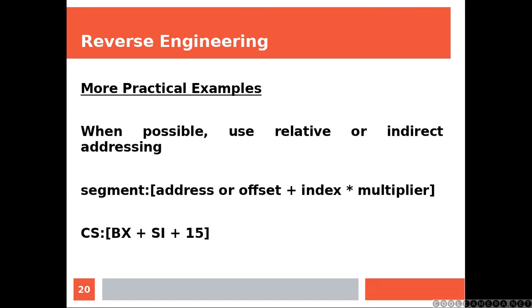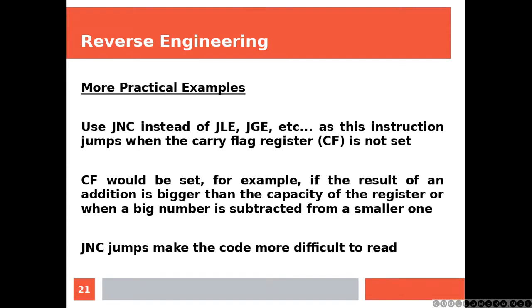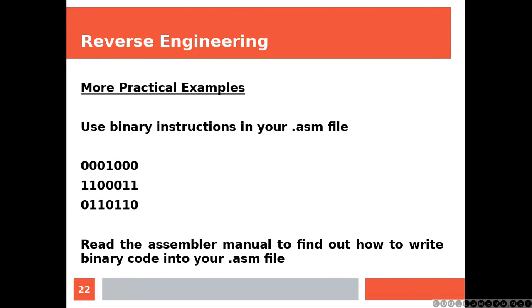More practical examples. When possible, use relative or indirect addressing, like the following. Use JNC instead of the other jumping instructions. As JNC jumps when the carry flag register is not set, which makes the code much more confusing. In fact, CF would be set, for example, if the result of an addition is bigger than the capacity of the register, or when a big number is subtracted from a smaller one. JNC jumps make the code more difficult to read. Use binary instructions in your assembly file. Read the assembly manual to find out how to write binary code in your assembly file.